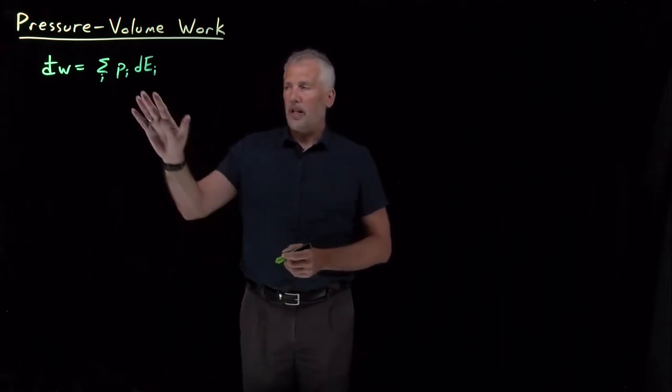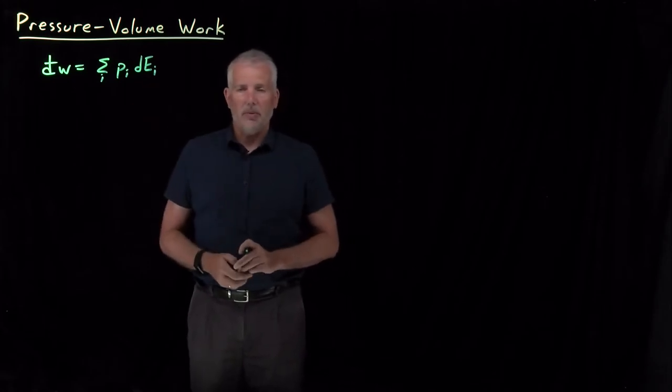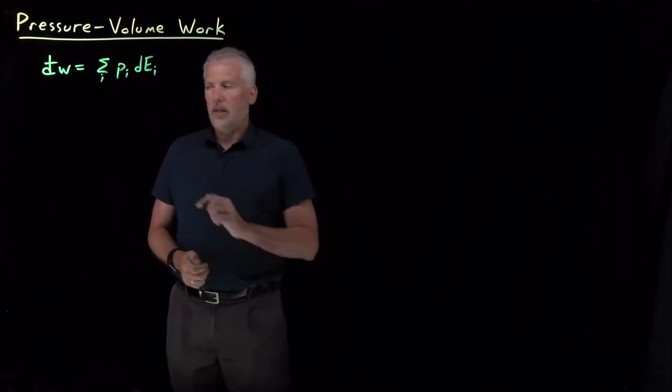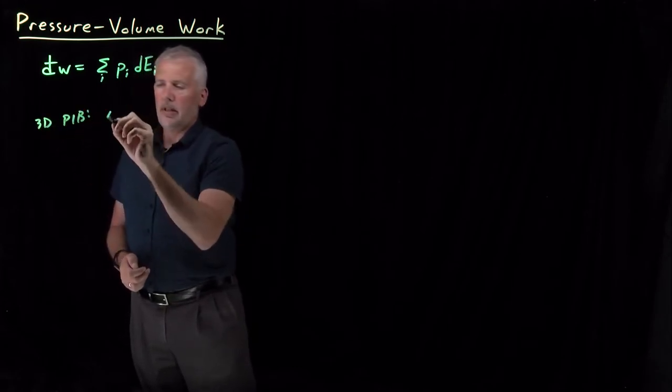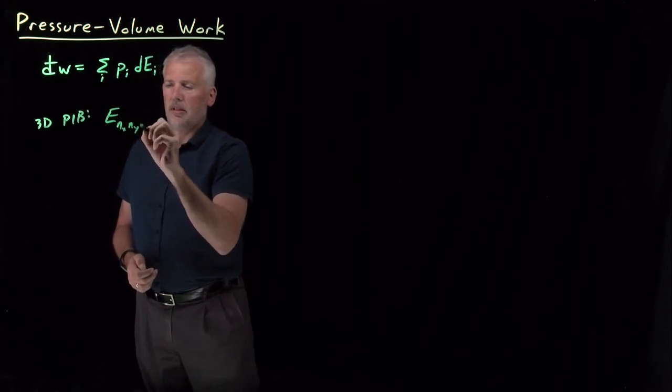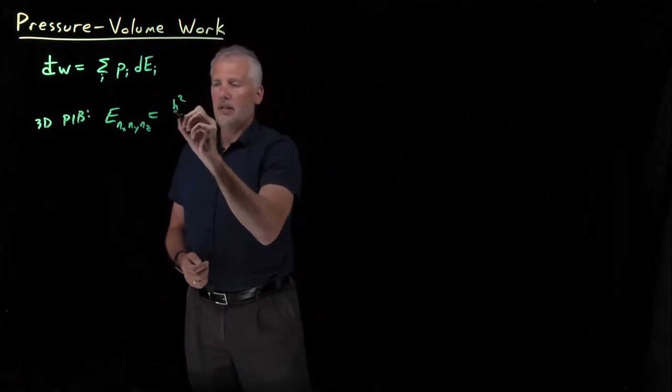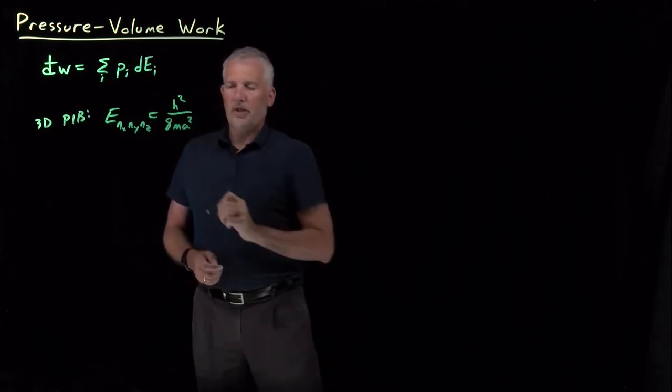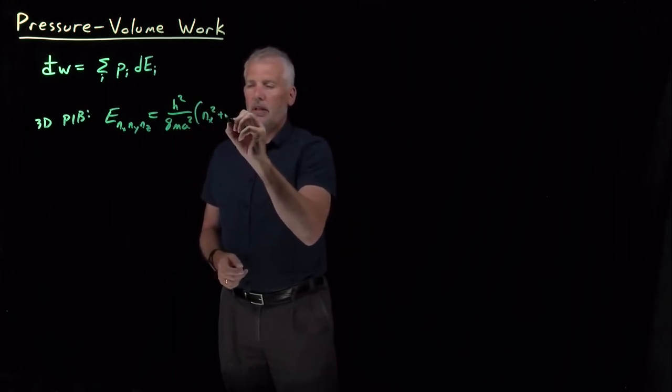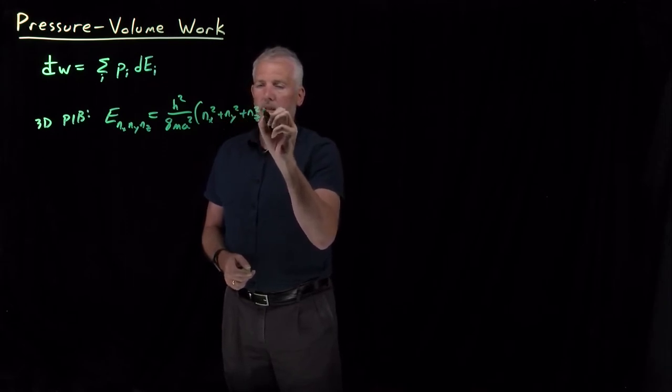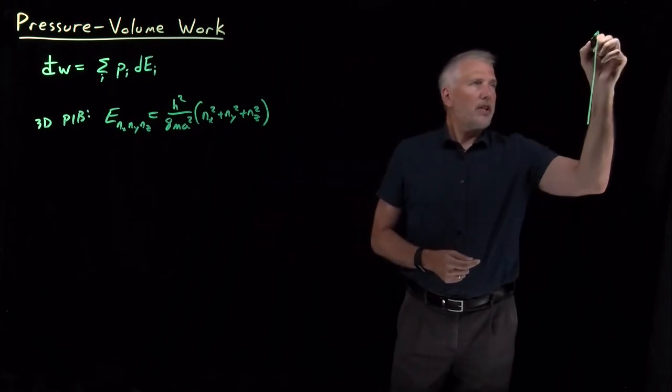So to see why that's true, let's think about the one case where we can describe the energies in detail at the moment, which is for a gas, we can treat a gas with the 3D particle-in-a-box model. And that model tells us the energy levels for molecules in a container. If it's a cubic box, box length A, then I can write the energy levels this way. So that describes some energy ladder, which I'll draw off to the side over here just as an illustration.